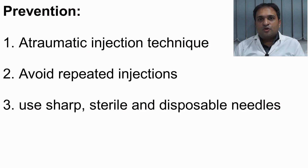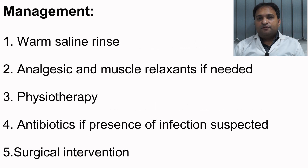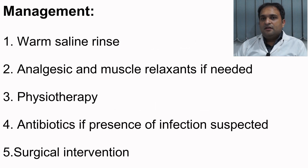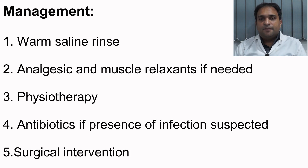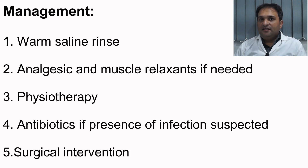Methods to prevent trismus include atraumatic injection techniques, avoiding repeated injections, and using sharp sterile disposable needles. Management involves heat therapy with warm saline rinse, appropriate analgesics and muscle relaxants if necessary, and physiotherapy for 5 minutes every 3–4 hours. If infection is suspected, antibiotic therapy for 7 days should be prescribed. Improvement generally starts within 2–3 days and recovery ranges from 4–8 weeks. Surgical intervention may be needed in some cases.